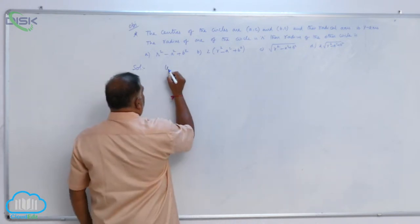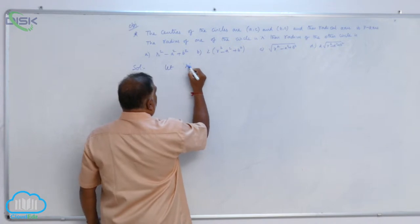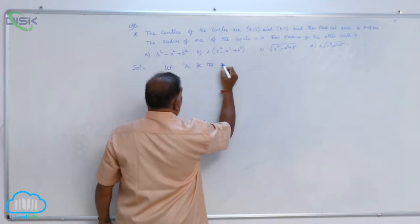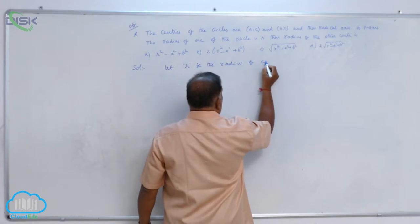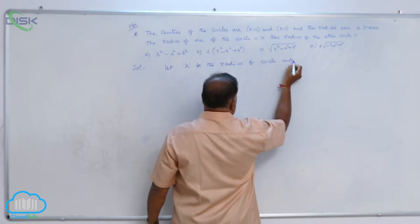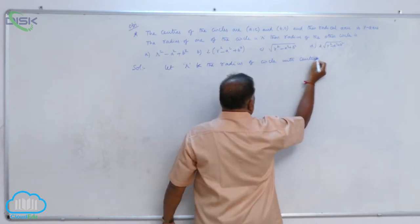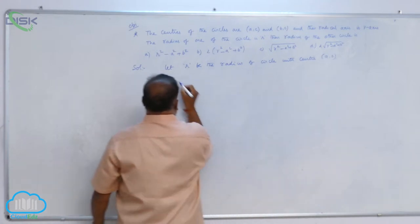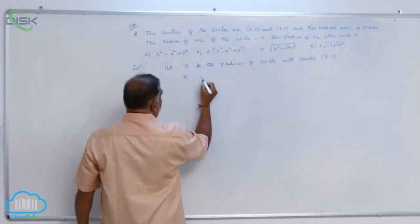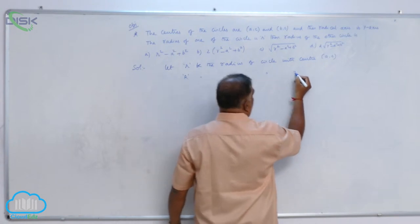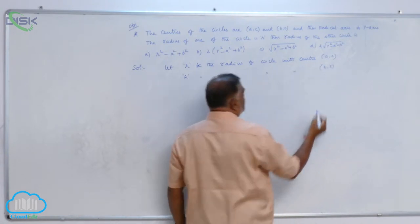Let r be the radius of the circle with center (a, c) and capital R be the radius of the circle with center (b, c).